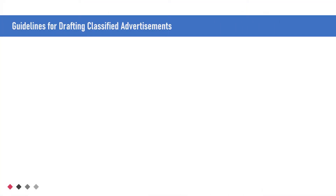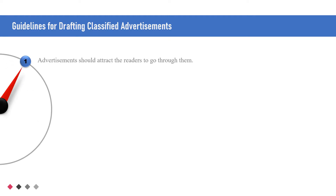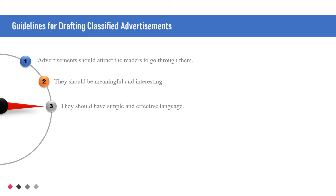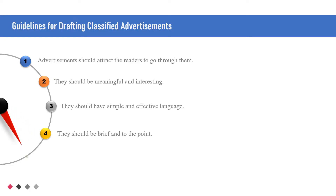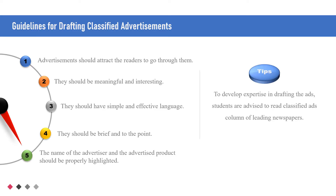Guidelines for drafting classified advertisements: Advertisements should attract readers to go through them. They should be meaningful and interesting. They should have simple and effective language. They should be brief and to the point. The name of the advertiser and the advertised product should be properly highlighted. Tip: To develop expertise in drafting advertisements, students are advised to read the classified advertisement column of leading newspapers.